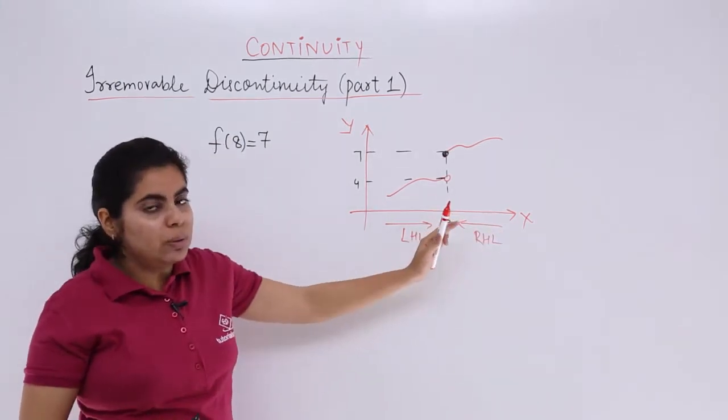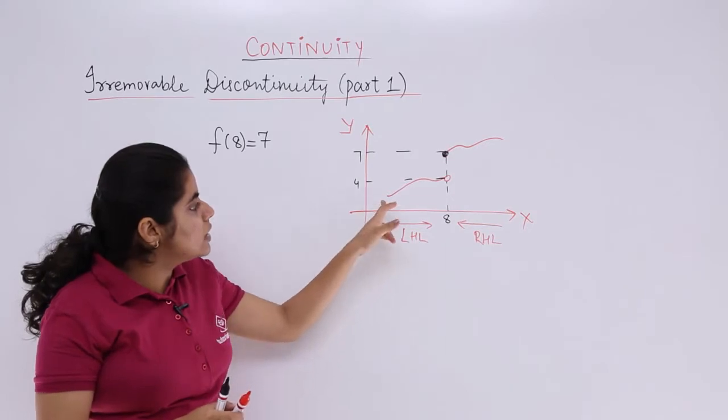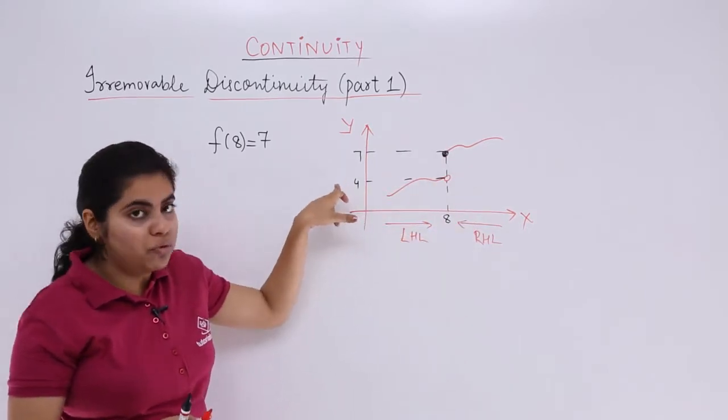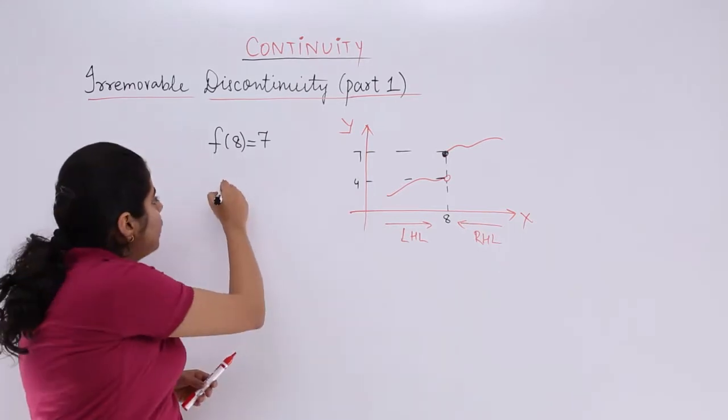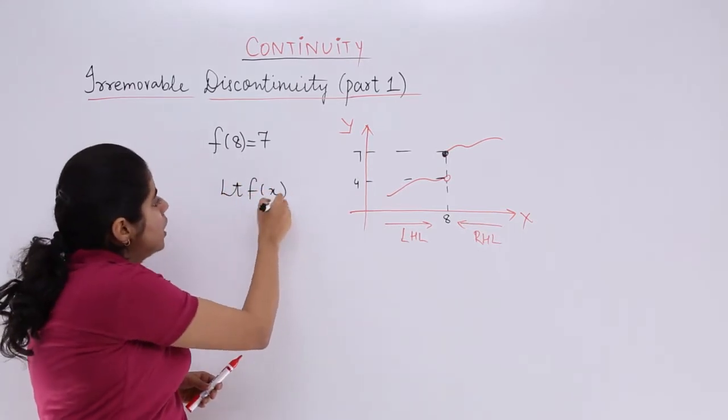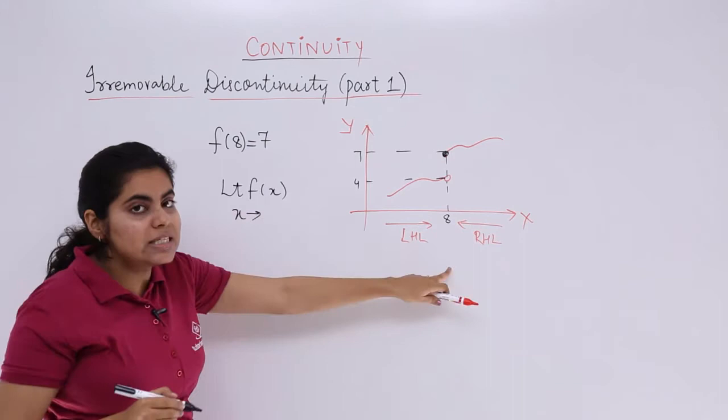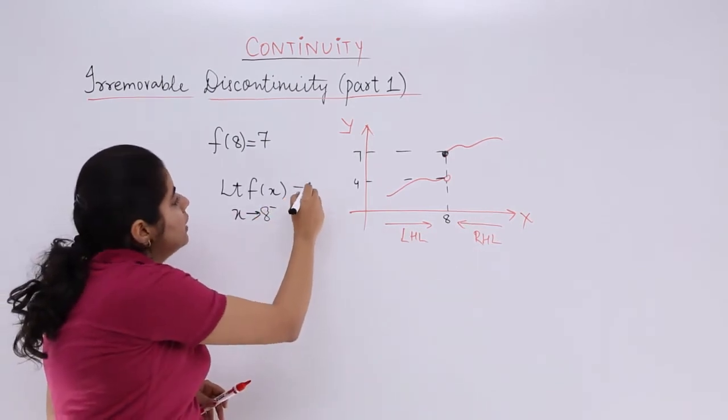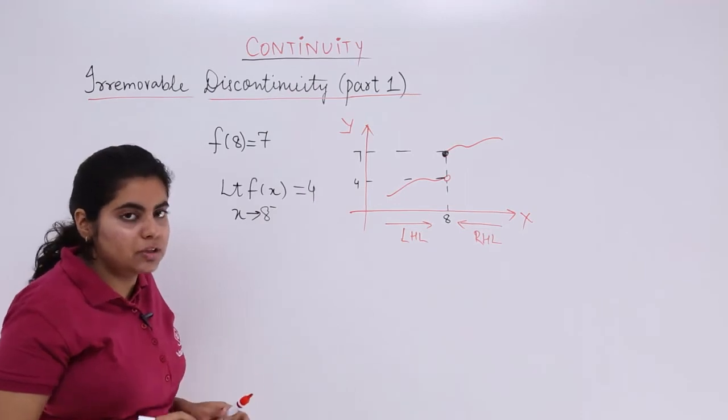Now from left-hand side when you approach, you see that the curve is here. And you approach it, you get the value as 4. So when you approach the function from left-hand side of 8, that is 8 negative, you get the value as 4. Very fine with it, okay.